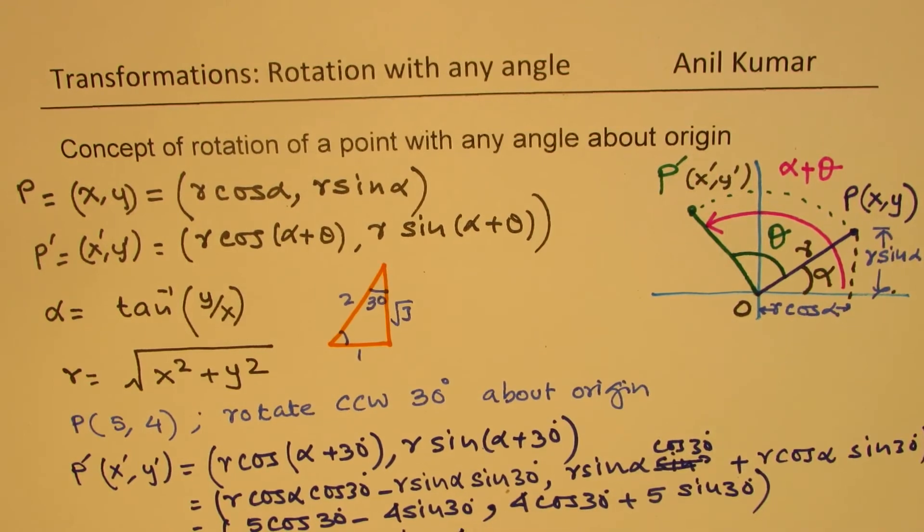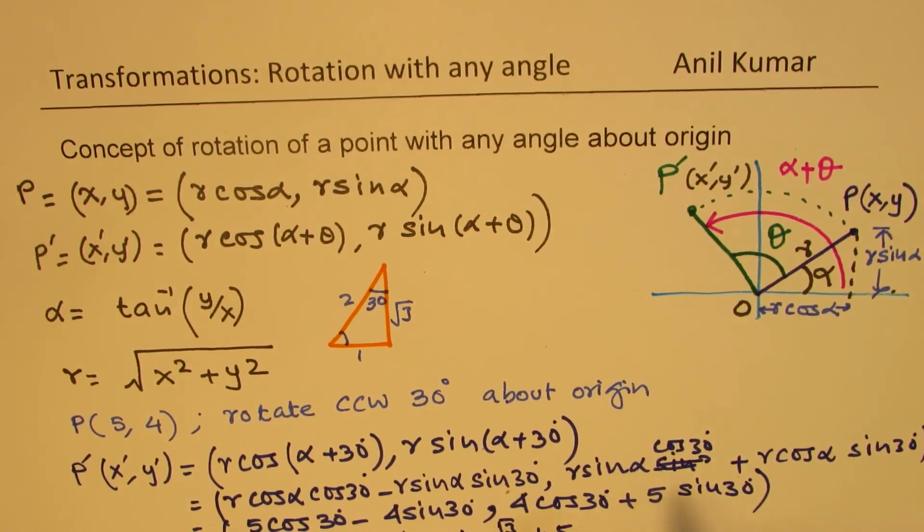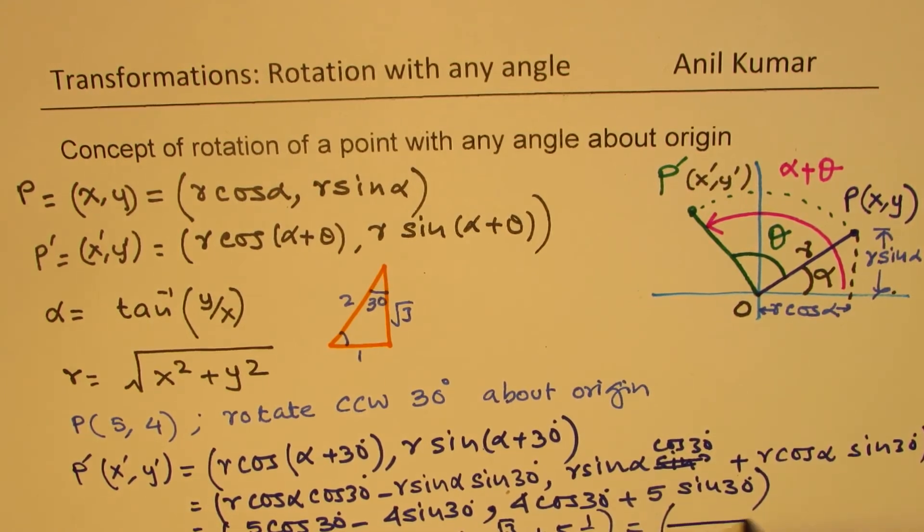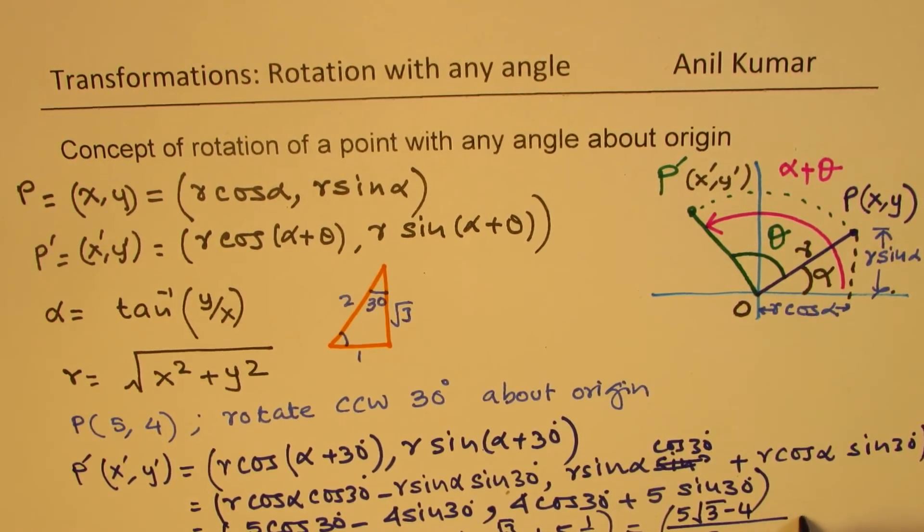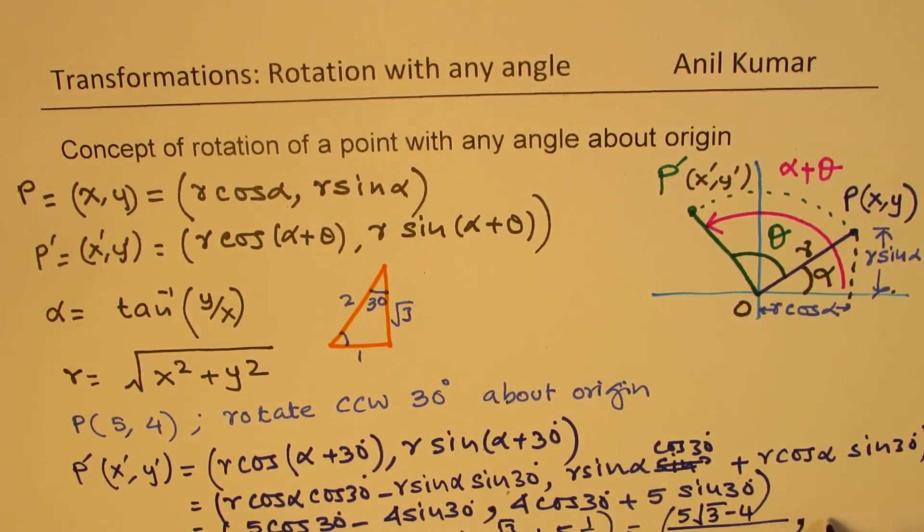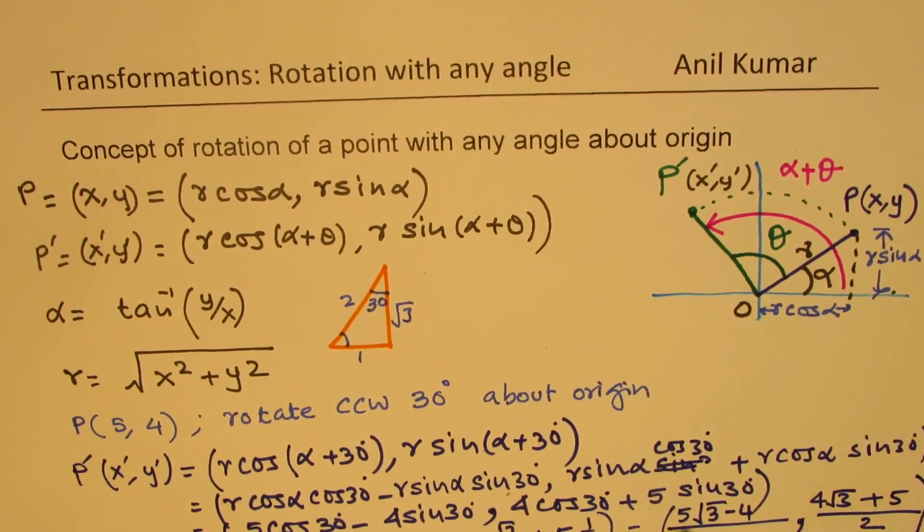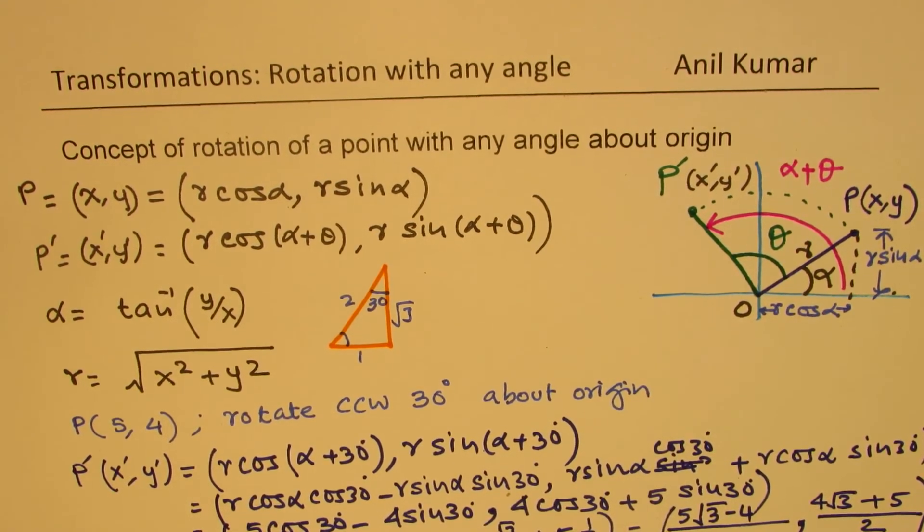The y-value will be 4 times cos of 30 square root 3 over 2 plus 5 times sine of 30, which is half. Which you could calculate and write down the result as common denominator of 2. 5 square root 3 minus 4, that's the x-value. The y-value will be common denominator of 2, 4 square root 3 plus 5.